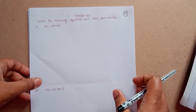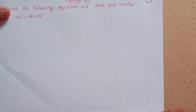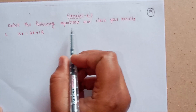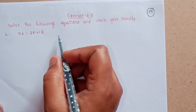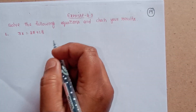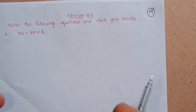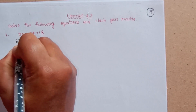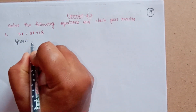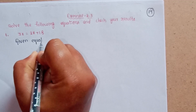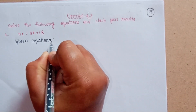Exercise 2.3. Solve the following equations and check your result. The given equation has x on both sides — this is the one-step transposition method.